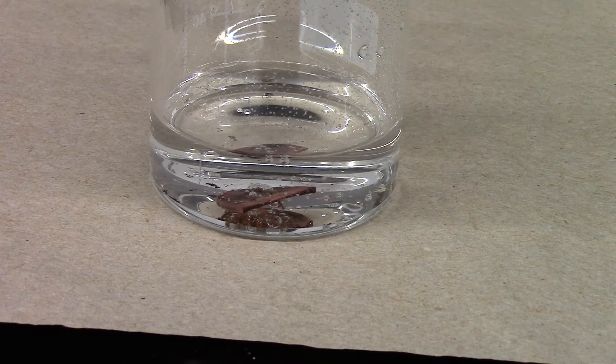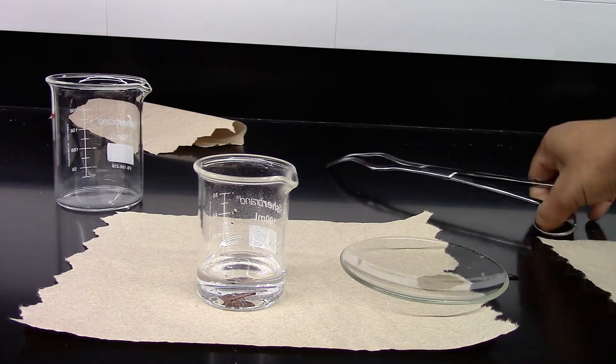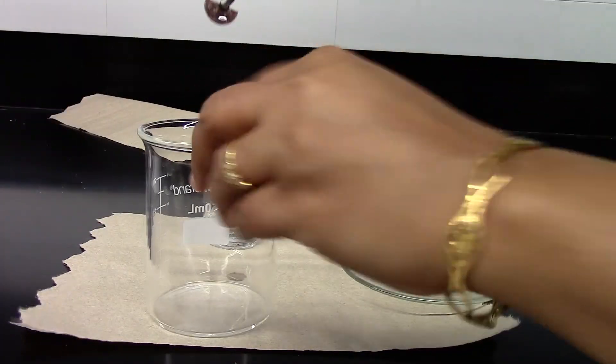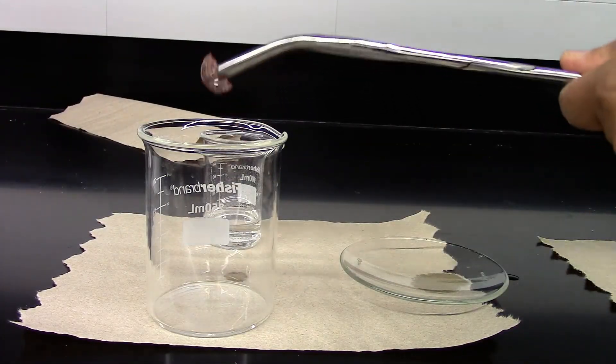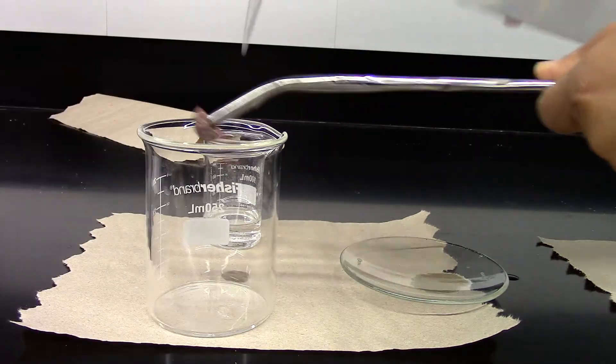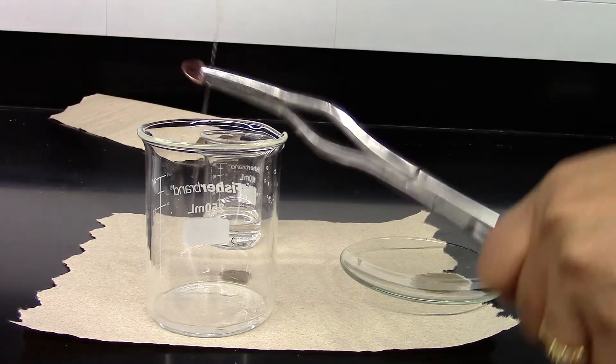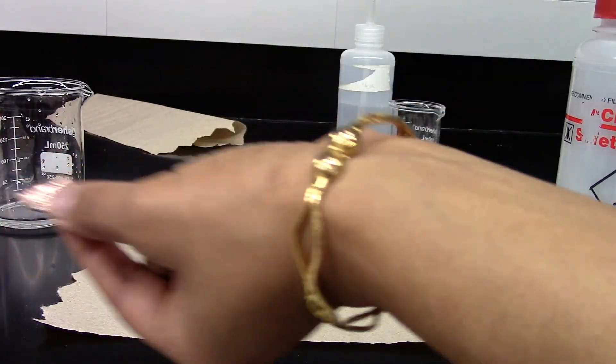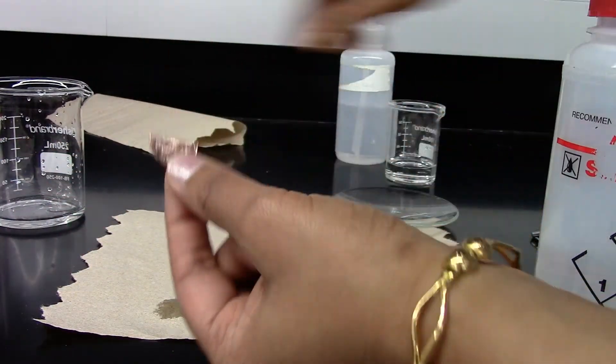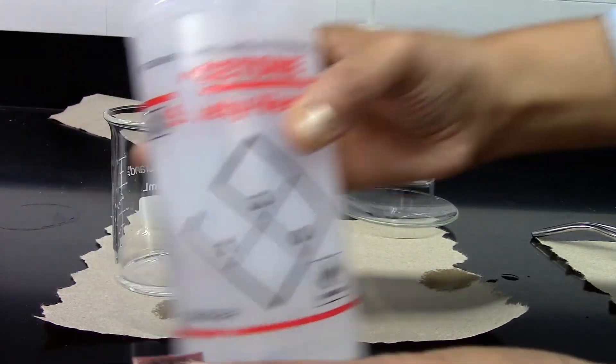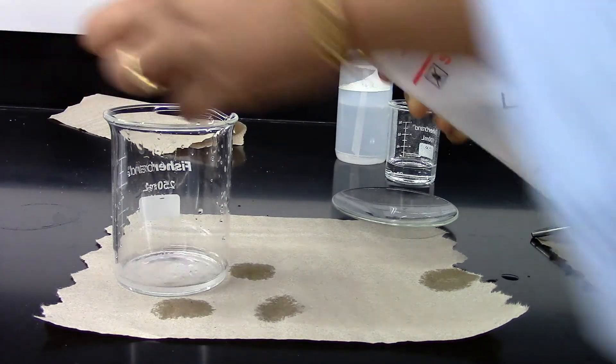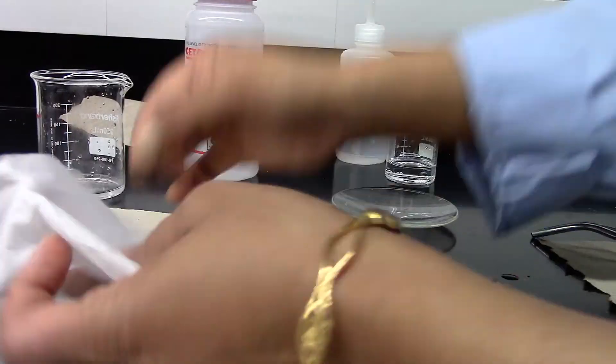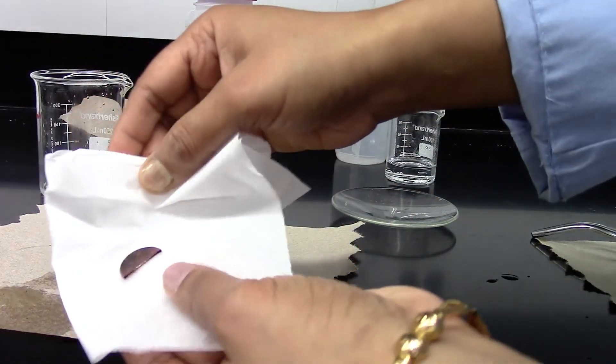Clean it, dry it, and get the mass. I'm going to take out the coin with a tong or tweezers. And I'm going to rinse it with some DI water from the wash bottle. So now it's safe to hold because it's already rinsed out. I'm going to rinse it with some acetone.